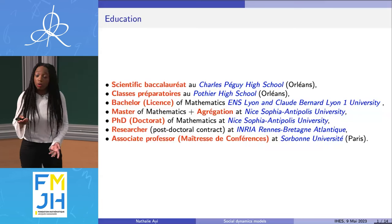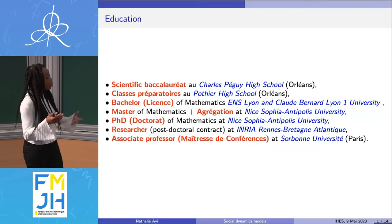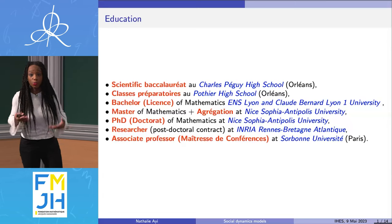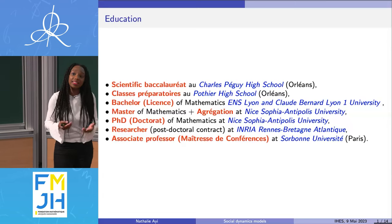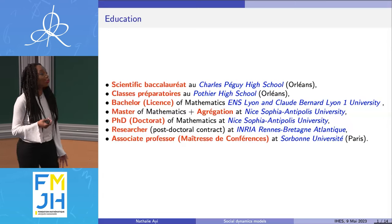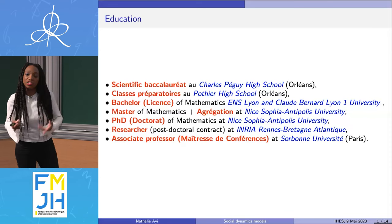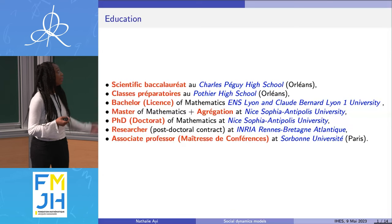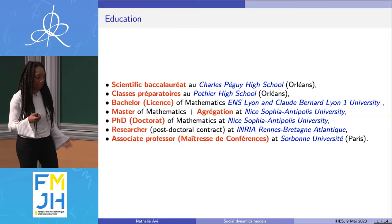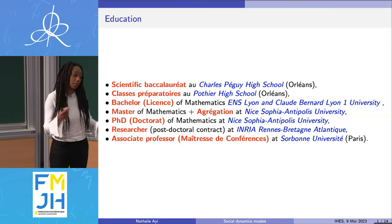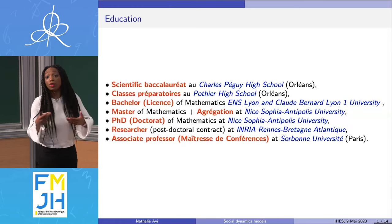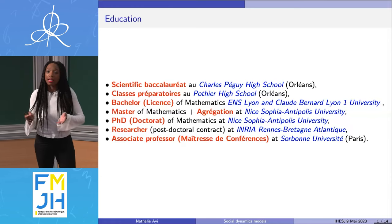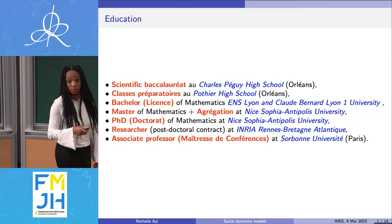I obtained the opportunity to do a PhD, and when I did, I fell in love with research and decided that's what I want to try to do. So I tried to obtain a position. First I obtained a temporary position at INRIA Rennes. I stayed there one year and then did the competitive exam to obtain a permanent position, which I obtained at Sorbonne University, and I've been there since 2017.